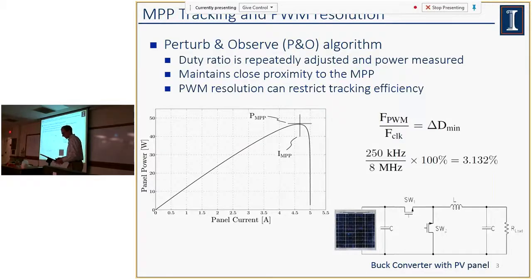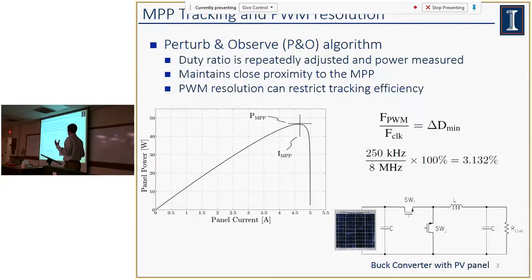First of all, maximum power point tracking. The IV curve of a photovoltaic panel is nonlinear, which gives us a maximum power point — a value of current and voltage at which the panel power is maximized. If we change our panel current in either direction of this I_MPP, our power generated through the panel drops off. To operate at this panel maximum power point, we need fairly good control over the converter, and in a switching power converter, our control resolution is determined by our duty ratio resolution.